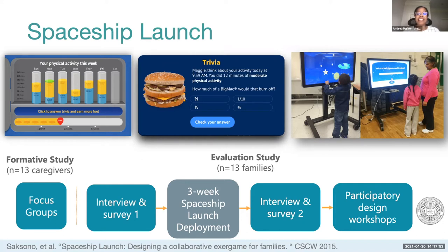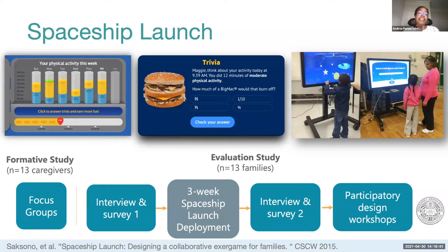The more time spent being active, the more fuel the child earns to launch their spaceship to distant planets. Throughout the week, the family has access to a data dashboard that visualizes their activity levels. A trivia mini game allows families to earn more fuel points by reflecting on the relationship between physical activity and caloric burn. Once a week, families access the Spaceship Launch game on an interactive display installed in a community center in a low-SES area of Boston. The center provides a free safe space for families to be active together.